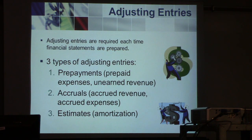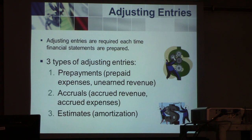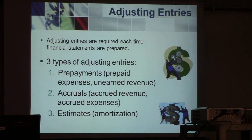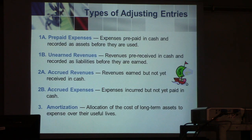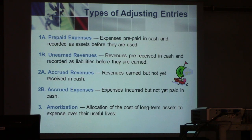There are three types of adjusting entries we're going to talk about. The first deals with prepayments, which include prepaid expenses or unearned revenues. The second type is accruals — accrued revenues and accrued expenses. The third type is estimates, and the only estimate we'll discuss is amortization.